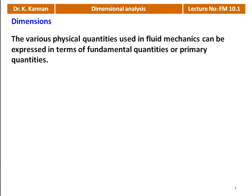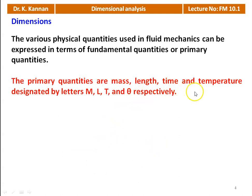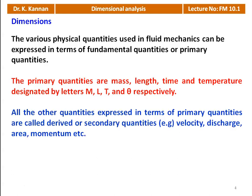Dimensions: the various physical quantities used in fluid mechanics can be expressed in terms of fundamental or primary quantities. The primary quantities are mass, length, time, and temperature. In fluid mechanics applications, we are not going to use temperature. The three important primary quantities are mass, length, and time — MLT. M is for mass, L for length, T for time, and theta for temperature. All other quantities expressed in terms of primary quantities are called derived or secondary quantities, for example velocity, discharge, area, momentum, etc.